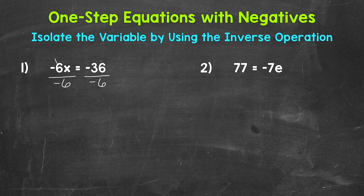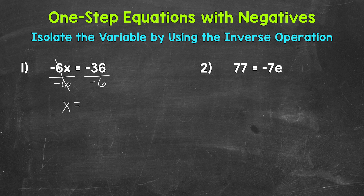These negative 6s cancel out — they equal a positive 1 because we have negative 6 divided by negative 6. A negative divided by a negative equals a positive, so we end up with a positive 1. This gives us 1x, which is just x. And on the right side of the equation, negative 36 divided by negative 6 equals a positive 6, because a negative divided by a negative equals a positive. So our solution is x equals 6.